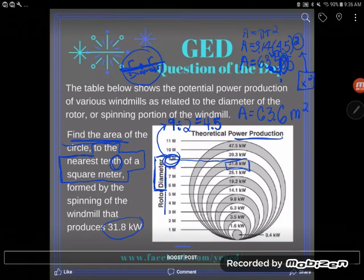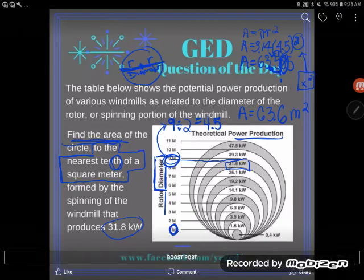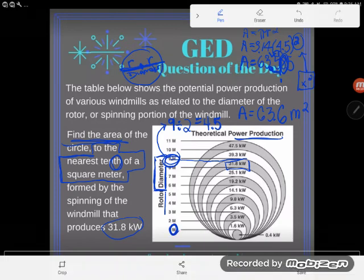You might be thinking, Kate, why is it square meters? The original diameter measurement and radius measurement that I was looking at was in plain old meters. Well, this is area. Remember that area is always measured in square units.